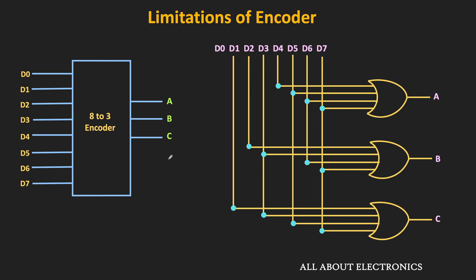To resolve this discrepancy, we can add one more output V to the encoder, which indicates that at least one input is high. If all inputs are zero, V will also be zero, and when V equals zero, the other outputs are irrelevant. In this way, we can distinguish the condition when all inputs are zero.